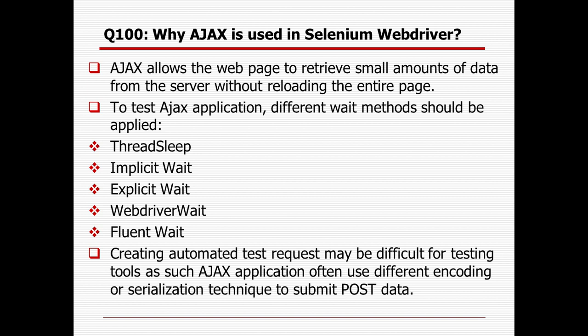Why is AJAX used in Selenium WebDriver? AJAX allows a web page to retrieve small amounts of data from the server without reloading the entire page. To test AJAX applications, different wait methods should be applied: Thread.sleep, implicit wait, explicit wait, fluent wait, and WebDriverWait. Creating automated stress requests may be difficult for testing AJAX applications, as they often use different encoding or serialization techniques to submit POST data. That's all 25 questions for today — these are the 100 questions and answers for automation testing and Selenium WebDriver only. Thank you for watching.